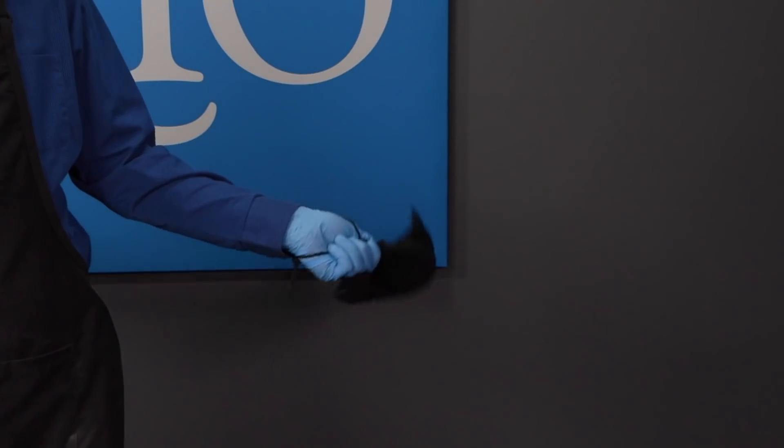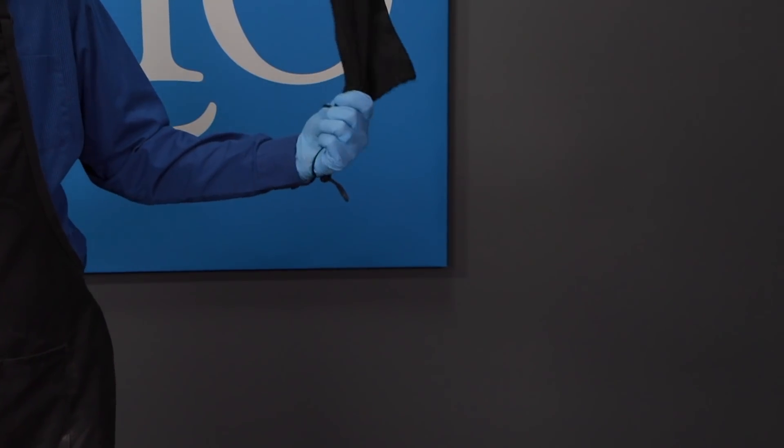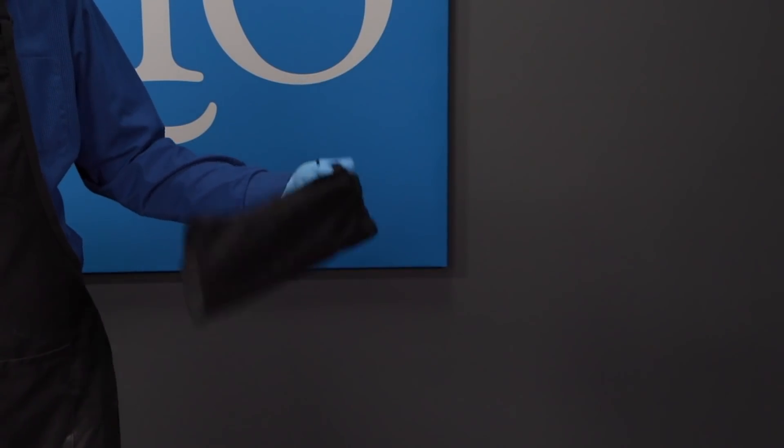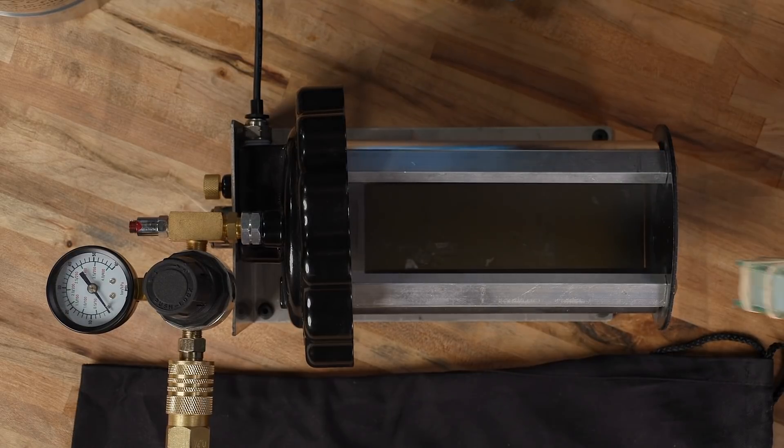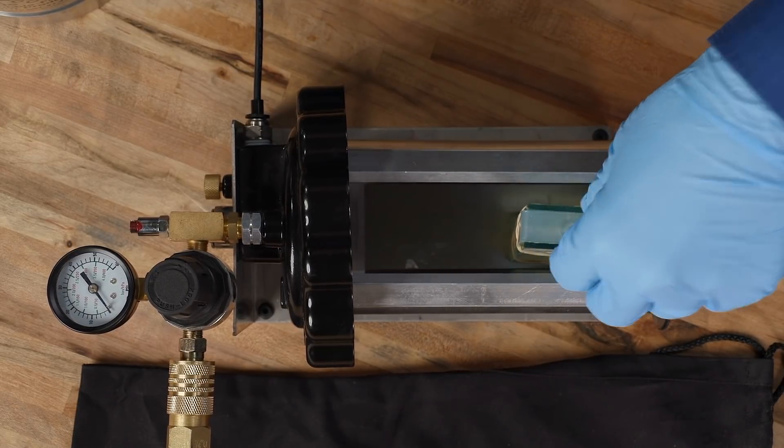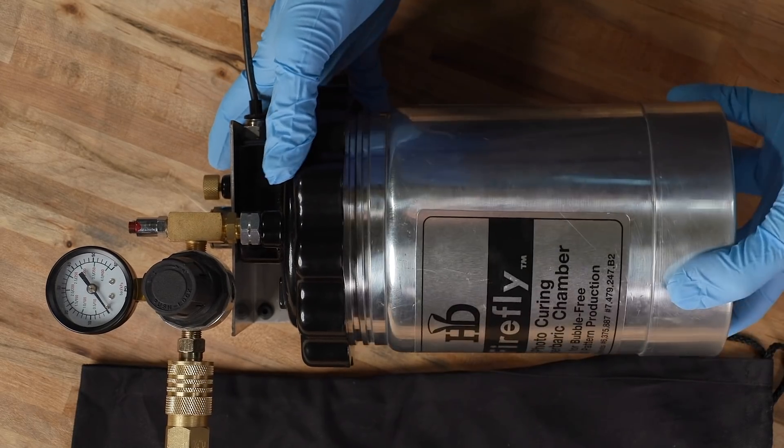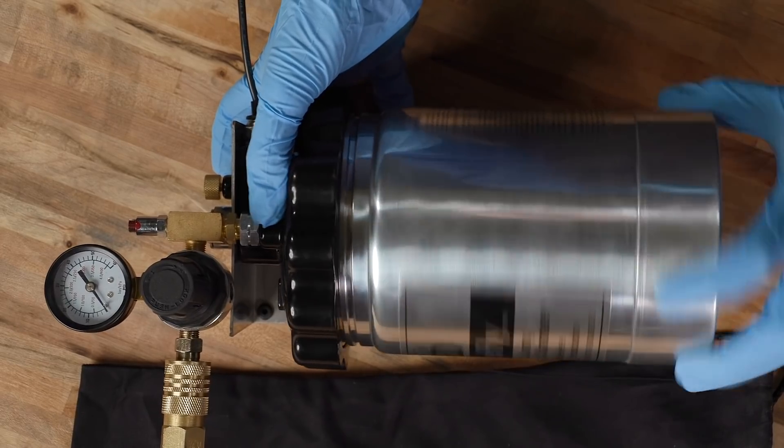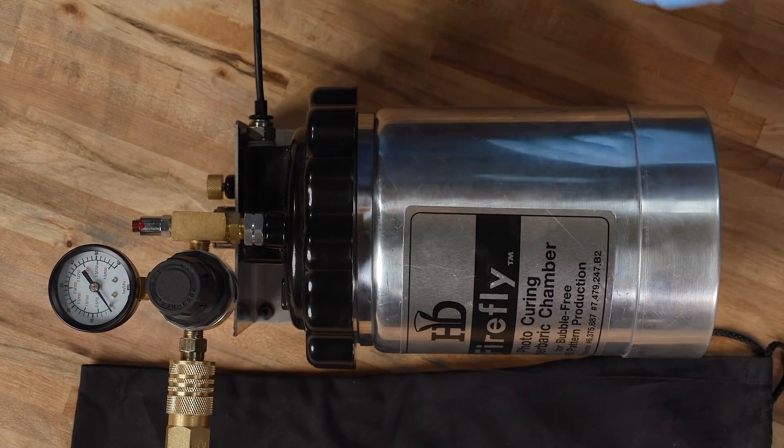Occasionally you will get air bubbles, or the mold won't completely fill. So the sling will actually help you eliminate some of those air bubbles and push the photopolymer into those hard to reach areas. So now that we've injected our master copy into the mold, we're going to insert it into the Firefly unit so we can pressurize it and cure it. So I'm going to add on the outer casing and I'm going to pressurize it again to 30 psi.